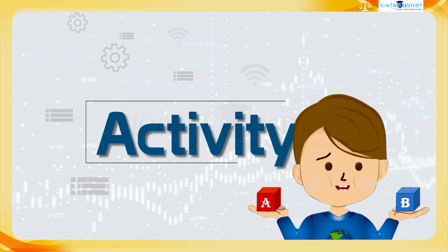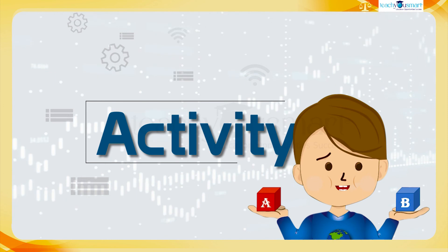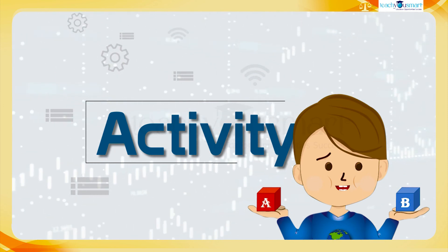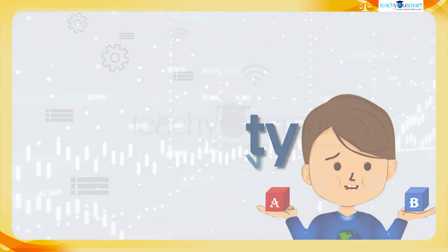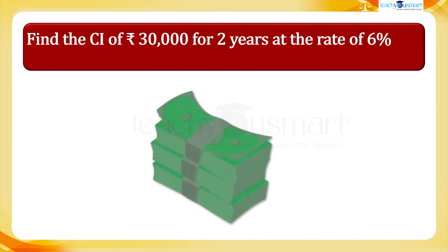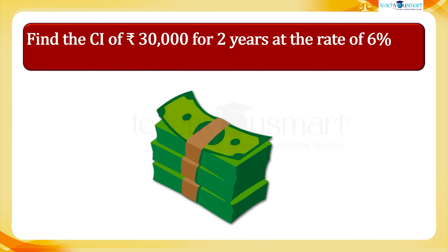Let's check how much you understood by doing an activity. Find the compound interest on 30,000 rupees for two years at the rate of 6%, compounded half yearly.